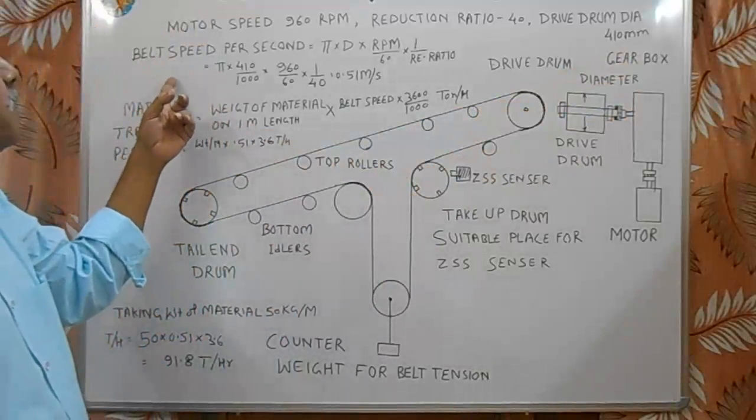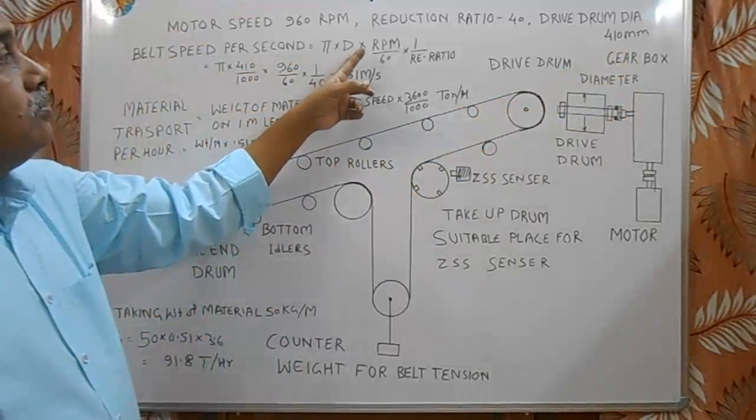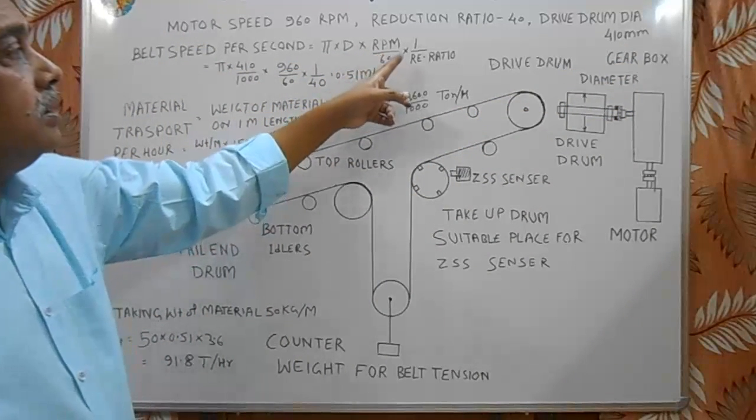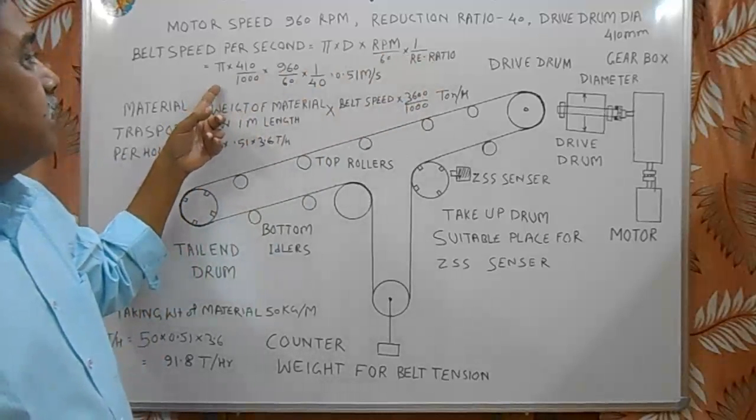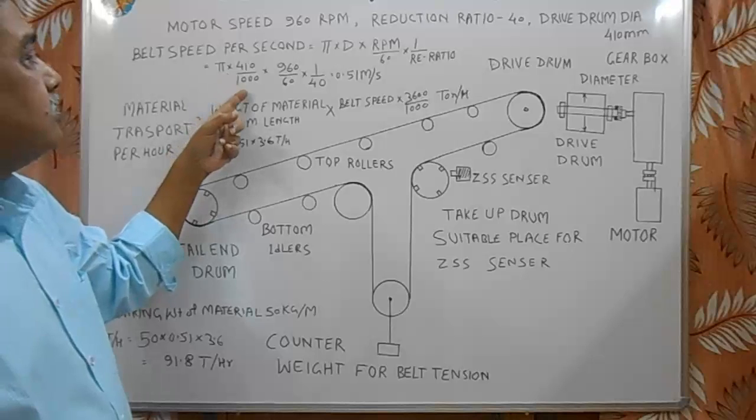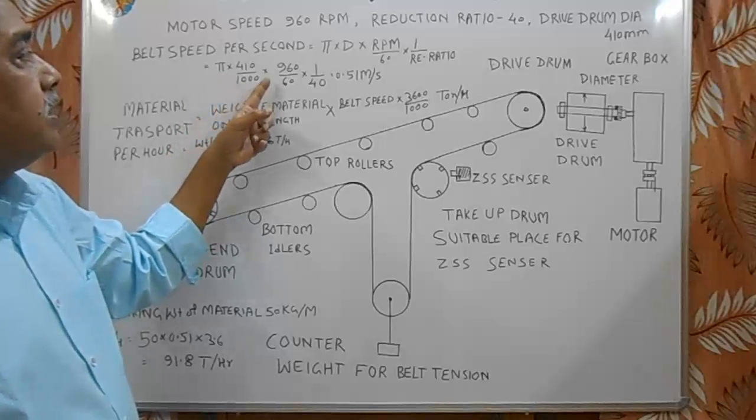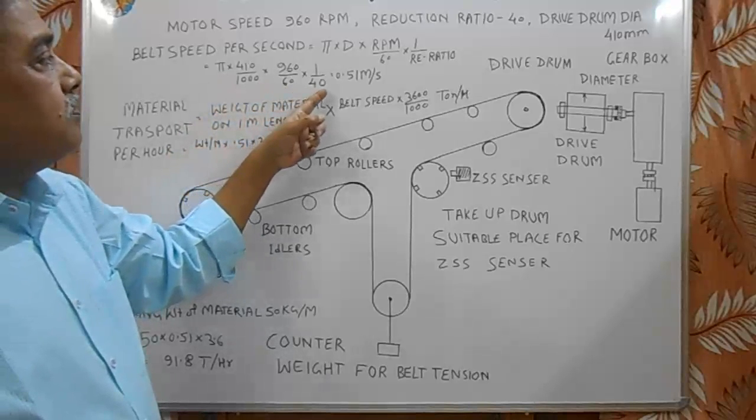So the belt speed per second is equal to pi into d into rpm of motor upon 60 into 1 by reduction ratio. That is equal to pi into drum diameter 410, 410 by 1000 to convert it in meters, multiply 960 by 60 speed in rps into 1 by 40 reduction ratio.